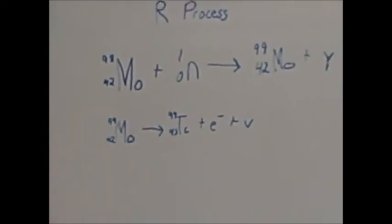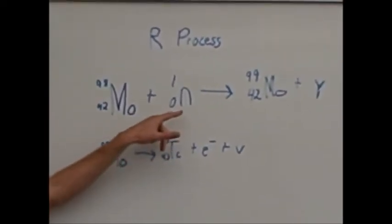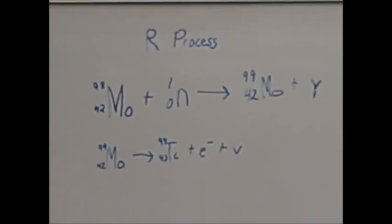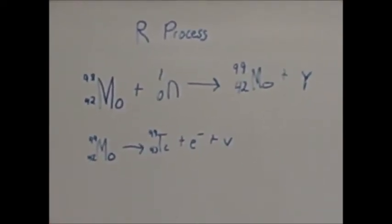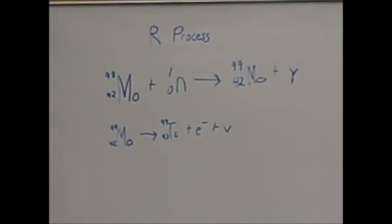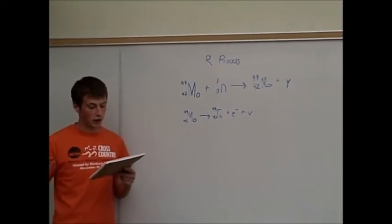Now, this element can then also go on and get more neutrons and repeat the same process, slowly increasing the atomic number to get the larger and larger elements. This is the R process.